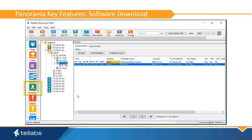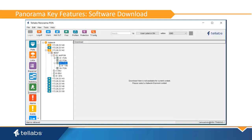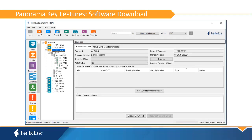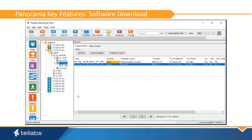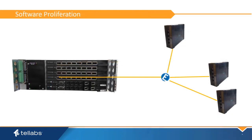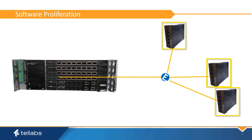The Software Download application is a secured process for downloading and establishing software at the network element. During the software upgrade process, the EMS downloads software to the OLT shelf — specifically to the Ethernet switching units first — then software is loaded to the PON interface cards, and then to the ONTs.